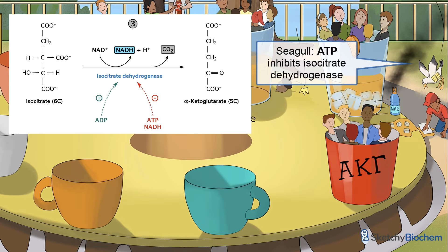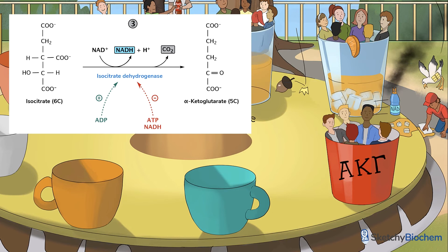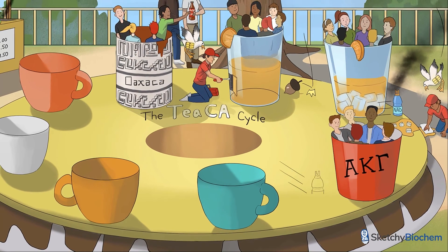Just like ATP, when NADH levels are high, there's a lot of energy inside cells, so we can slow down energy production by slowing down isocitrate dehydrogenase and the TCA cycle. In contrast, if cells are running low in fuel, most ATP has been used up and there'll be more ADP, which will stimulate the TCA cycle.